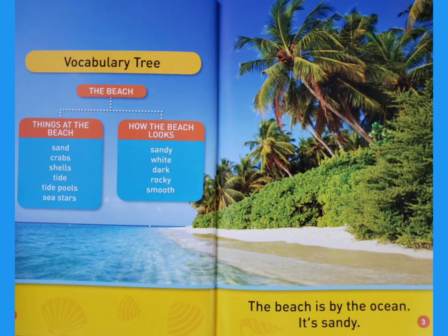Vocabulary Tree: The Beach. Things at the beach: Sand, crabs, shells, tide, tide pools.